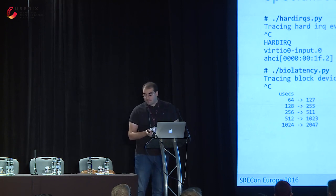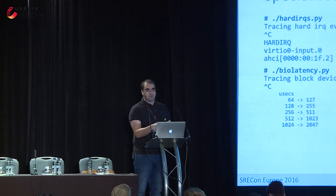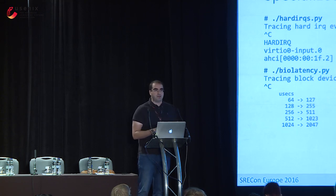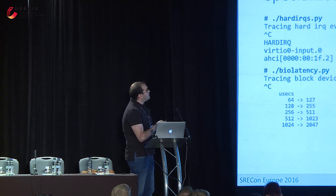On the file system side we have tools for getting latency distributions of file system operations — reads, writes, syncs, and so on. We have tools for detecting slow operations above a certain threshold. On the scheduler side we have tools for detecting when processes run on the CPU and when they get switched out — identifying processes that run a very long time or keep blocking. We also have generic tools for tracing any kernel function or trace point.